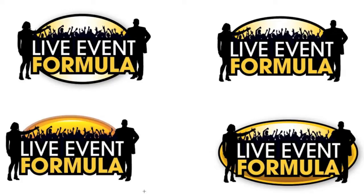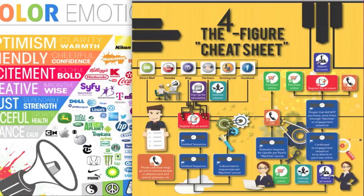This is what I call my four-figure cheat sheet — the lead magnet for my Live Event Formula funnel. It's a blended yellow and orange again. I want optimism to give people clarity and warmth, and to create a friendly, cheerful nature that elicits confidence. I want them to feel like they can do this. The colors keep them in the mood they want to be in rather than letting their ego shut it down — it opens them up. That's exactly why I used that color scheme.